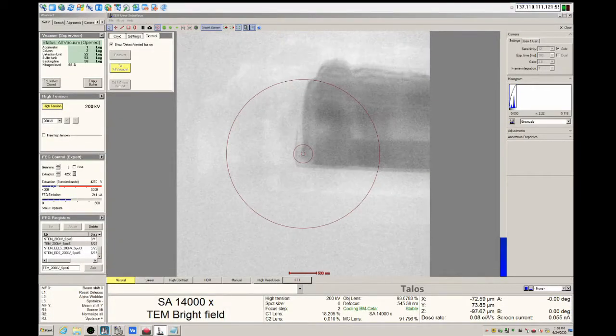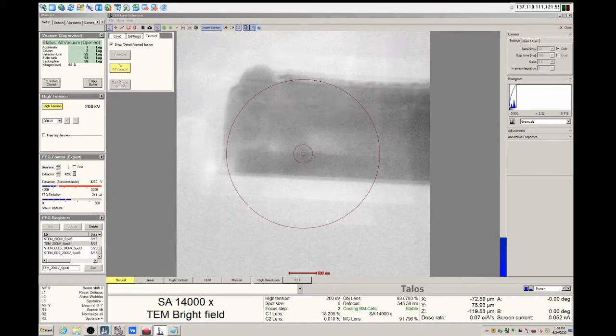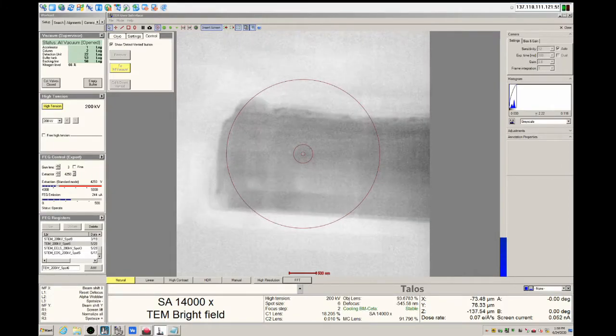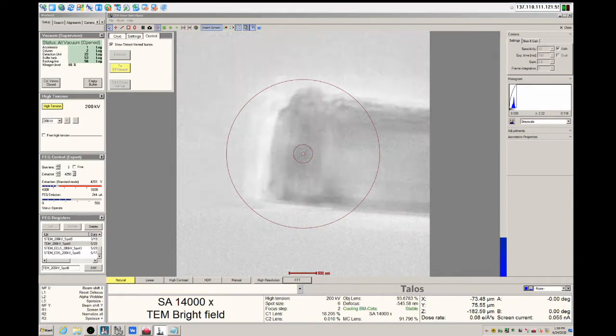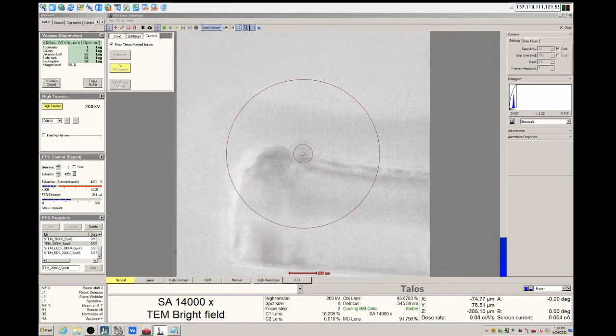The sample will be roughly at the eucentric height whenever there is minimal contrast between the sample and the vacuum background. In other words, the sample will look very pale and transparent, as shown here.